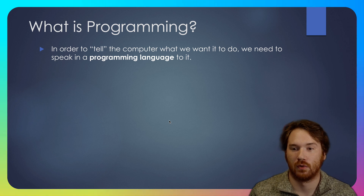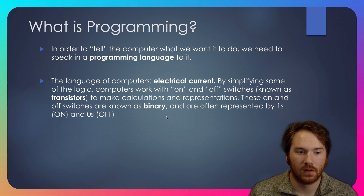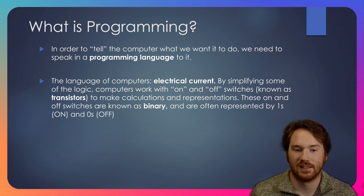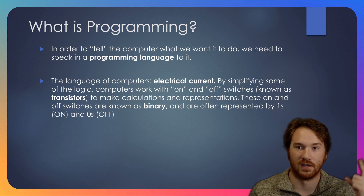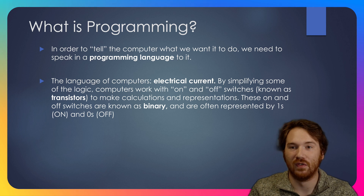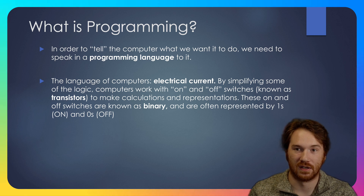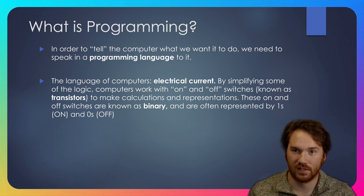In order to tell the computer what we want it to do, we need to speak in a programming language. The language of computers is actually electrical current — computers don't speak in human language. By simplifying some of the logic, computers work with on and off switches called transistors to make calculations and representations. These on and off switches are known as binary and are often represented as zeros and ones — one is on and zero is off. This is the way computers actually understand logic, and all instructions are written in binary.